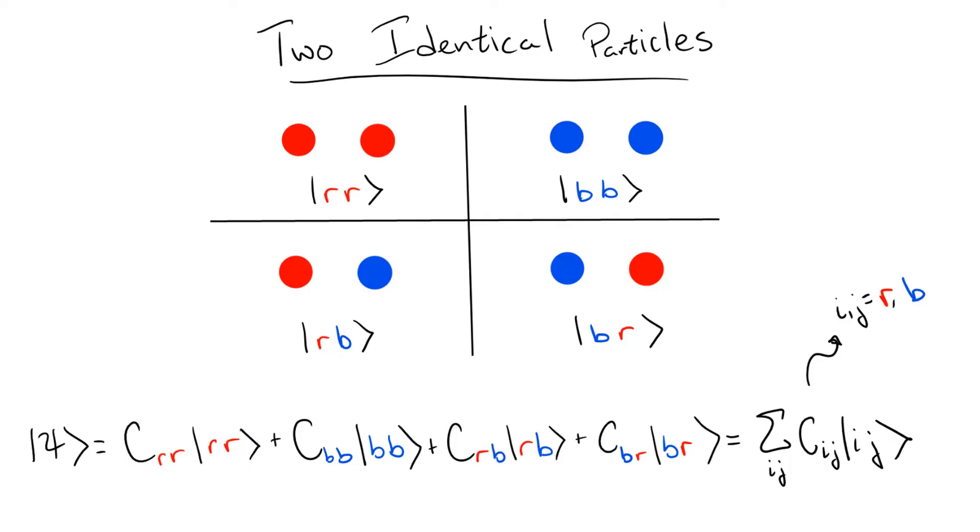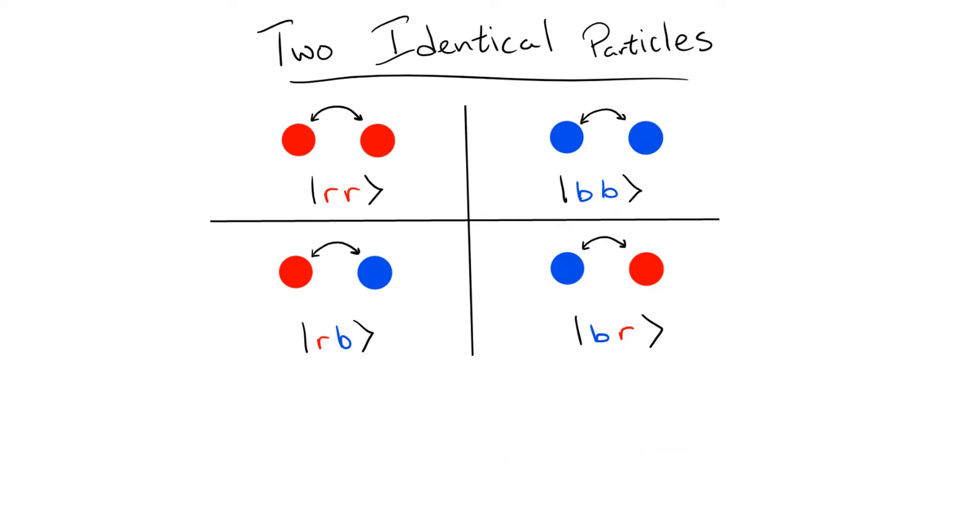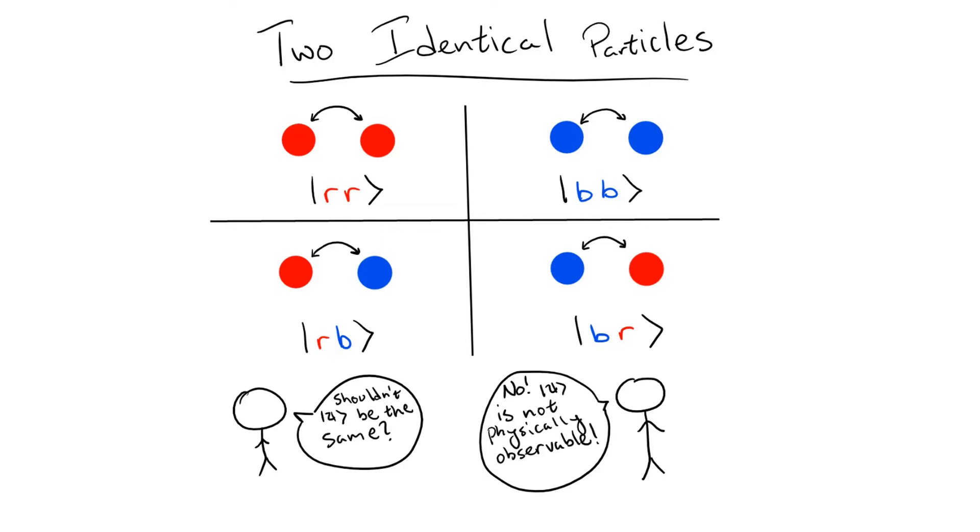Now, we're interested in what happens when we swap the states of our two particles. At first, we might not think that anything happens, since the two particles are identical, but this is the kind of intuition that goes out the window with quantum mechanics. In fact, there's nothing saying that our wavefunction can't be different when we switch the particles, since we never physically measure the wavefunction.